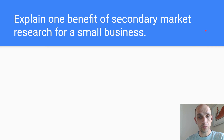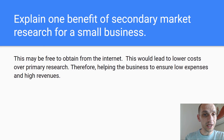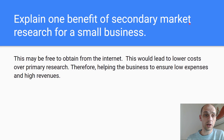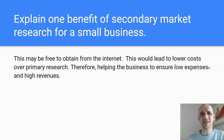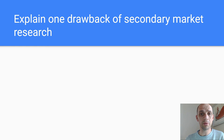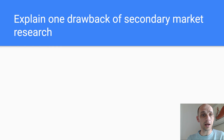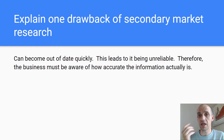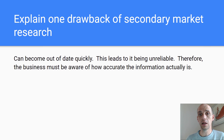Explain one benefit of secondary market research for a small business. This may be free to obtain from the internet, leading to lower cost compared to primary research — therefore helping the business ensure low expenses. Explain one drawback of secondary market research: it can become out of date quickly, leading to it being unreliable. Therefore, the business must be aware of how accurate the information actually is.